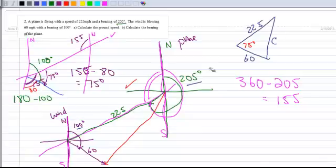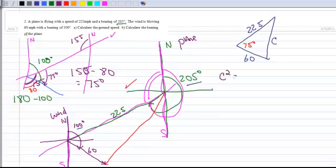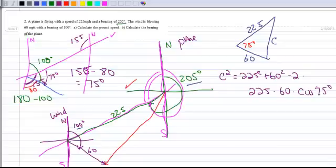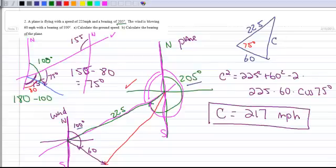Alright, so now that I know that, now I can use the law of cosines to find C. So C squared is going to equal 225 squared plus 60 squared minus 2 times 225 times 60 times the cosine of 75 degrees. Calculating that out, don't forget to square root, rounding to a whole number, you get 217, and the units are miles per hour. Your ground speed, or your resultant, is 217 miles per hour.